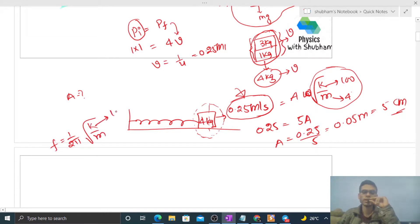So under root of k by m will be 25. Okay, so under root of 25, right? Under root of 25, so it will be 5.